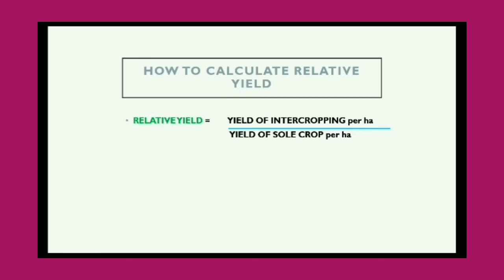If we are growing two crops — maize and groundnut — we add the yields of maize and groundnut together. Then, separately, we take the yield of maize alone and the yield of groundnut alone. First, we divide the sum of maize and groundnut yield by the yield of maize; then again we divide the sum of maize and groundnut yield by the yield of groundnut. This is how we get the relative yield of both crops.